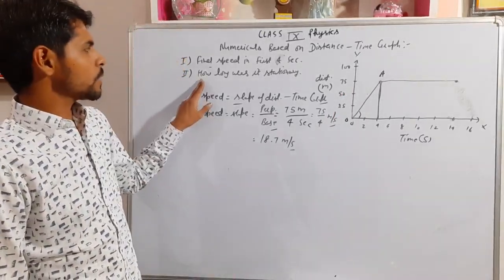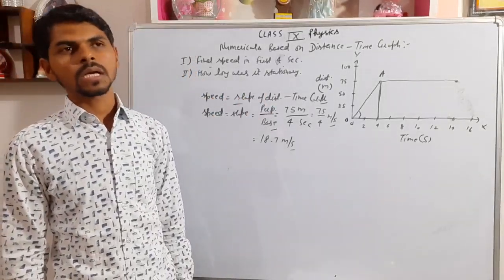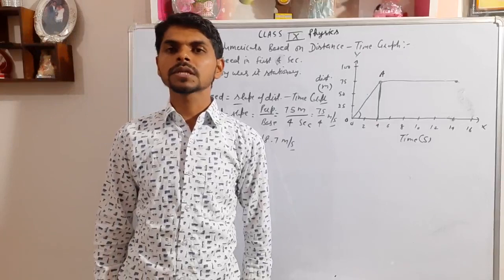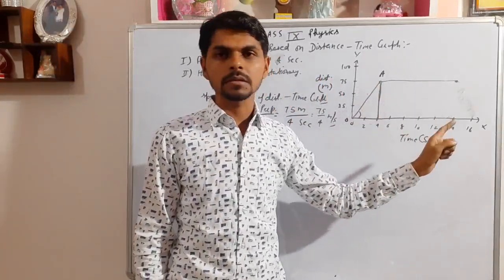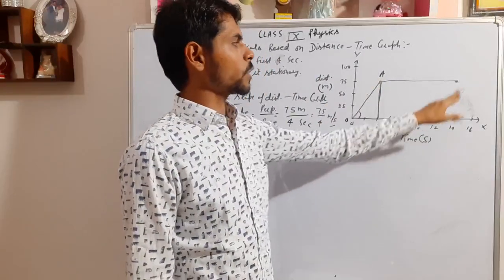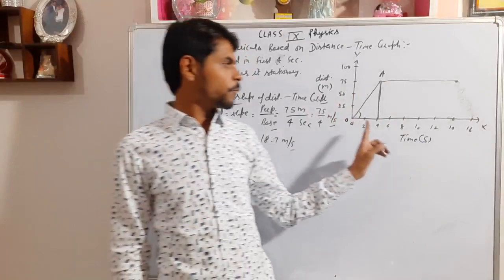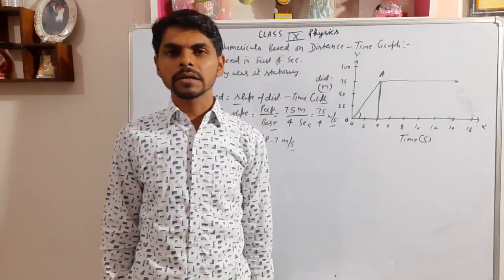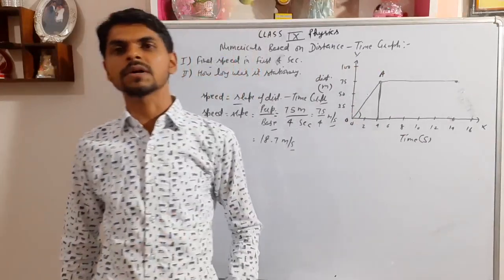The second part asks: how long was the body at rest? We studied that if a body is stationary, the distance-time graph is a line parallel to the time axis. From 4 seconds to 14 seconds, the graph is parallel to the time axis — the position stays at 75 meters. This means the body did not move from 4 to 14 seconds, so the body was at rest for 10 seconds.